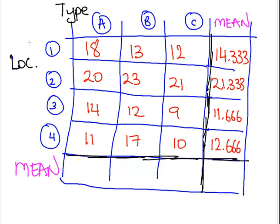Now we also get the column means as well. We are going to work down the first column here and get the mean for that. So the mean of 18, 20, 14, and 11, I make that to be 15.75. The next one I make to be 16.25, and the last column I make to be simply 13. The overall mean is going to be 15 if you work it out.